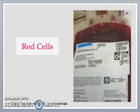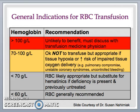Now let's look at the cellular blood products, beginning with the red cells. In general, if the patient's hemoglobin level is greater than 100 grams per liter, then the patient is unlikely to benefit from red cell transfusion. If the hemoglobin is between 70 to 100, then it is generally okay not to transfuse the patient, but red cell transfusion may be appropriate if there is tissue hypoxia or an increased risk of impaired oxygen delivery to the tissues, for example, in unstable coronary syndromes or uncontrolled bleeding. If the hemoglobin is less than 70, then red cell transfusion is likely appropriate, but non-transfusion alternatives, including hematinics, should be given if deficiency is demonstrated and previously untreated.